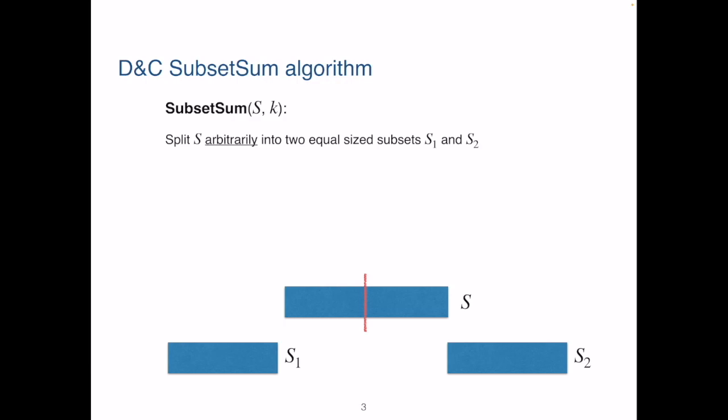Assume that there is a subset S prime of S that sums to K. We have three possible cases. First, all the elements of S prime are in S1. Second, all the elements of S prime are in S2. Third, some elements are in S1 and some are in S2.